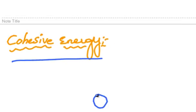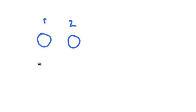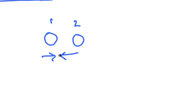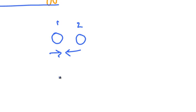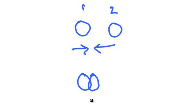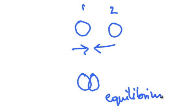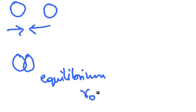Let us consider two atoms, one and two. The attractive forces between these two atoms bring them close together until the strong repulsive forces arise between these two atoms due to the overlap of electron shells. When the two atoms approach each other, the negatively charged electron shell comes closer than the positive nucleus. At a certain separation, the attractive and repulsive forces are equal. This separation is called the equilibrium separation, represented by the letter R0.